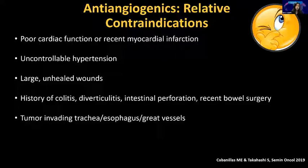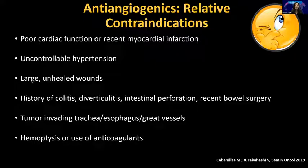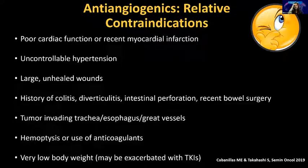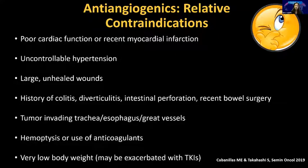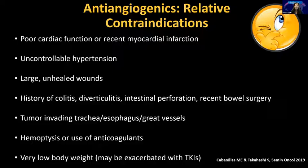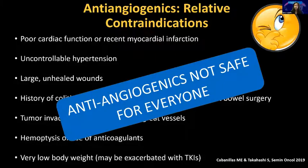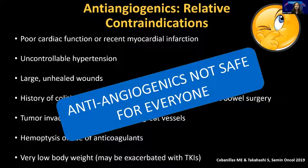We've had particular problems with patients with tracheostomy, so we're careful with those. Hemoptysis or use of anticoagulants because these can cause bleeding. Very low body weight is a relative contraindication, and with all kinase inhibitors except vandetinib, patients do lose a lot of weight. If you already have a patient who's quite thin, it's very easy to reach a point where you have to hold the drug for weight loss. The bottom line is anti-angiogenics are not for everybody, so we need other treatments for these patients.